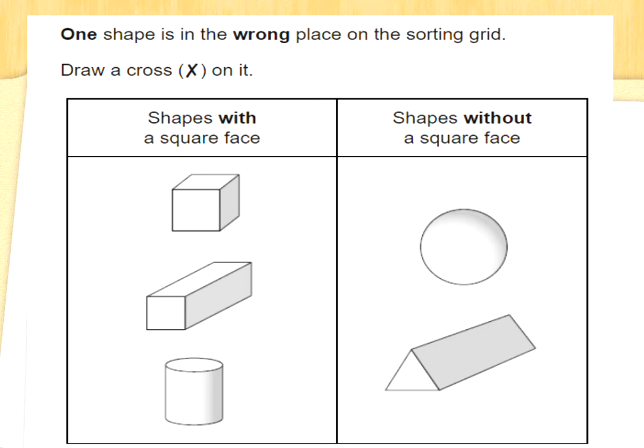One shape is in the wrong place on the sorting grid — draw a cross on it. On the left we need shapes with a square face: we've got a cube, a cuboid and a cylinder. On the other side we need shapes without a square face: a sphere and a triangular prism. The cylinder does not have a square face, so it needs to be on the side with the sphere and the triangular prism. It has a circular face. A square face just means it's got a square on the shape. Well done.